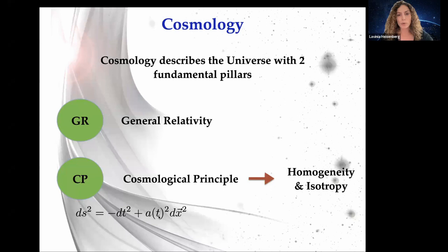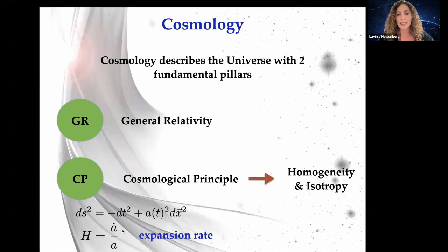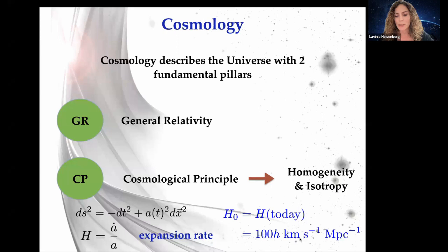The spatial part of the metric is given by a time-dependent scale factor a(t). An important quantity derived from it is the Hubble function H, which is nothing else but ȧ/a — the expansion rate. From this Hubble function we can derive the central cosmological parameter H0, obtained by evaluating this function today. During the talk I will switch between big H0 and small h, representing essentially the same thing.